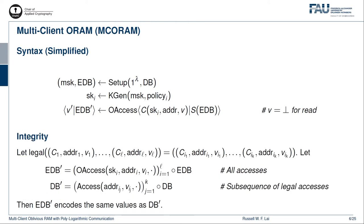Integrity, on the other hand, requires that, given any sequence of access instructions and its derived subsequence of legal instructions, if the full sequence is applied to the encrypted database while the legal sequence is applied to the plaintext database, then the two should end up encoding the same values.